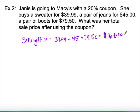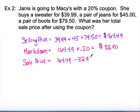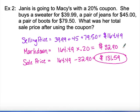I'll show this problem two ways — first using the given formulas. We calculate the markdown by taking the original price times 20%, which gives a markdown of $32.90. Then to find the sell price, we take the original price and subtract the markdown: $164.49 minus $32.90 gives us a sell price of $131.59.